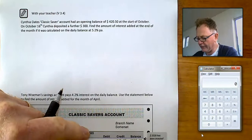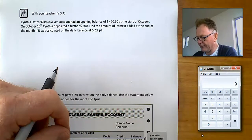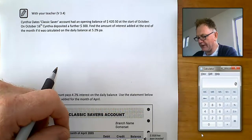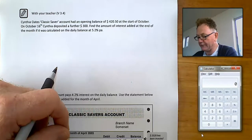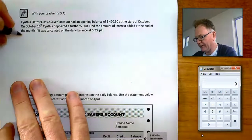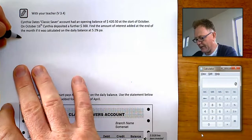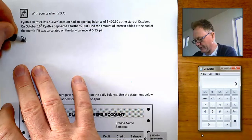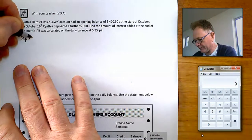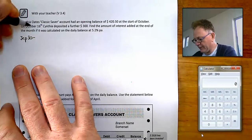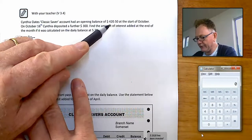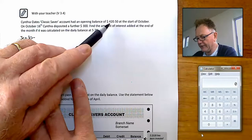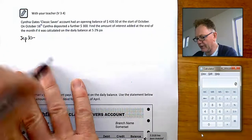Now Cynthia Oates' account had an opening balance of $420.50 at the start of October. That would mean that at the end of July the same amount was in there. You could take the opening periods being from September the 30th up until whenever her balance changed. Now it was that amount $420.50 at the start of the period and it didn't change until October the 16th.